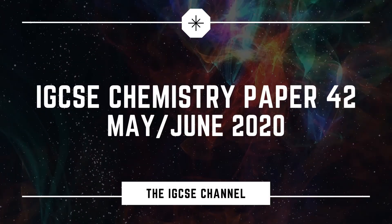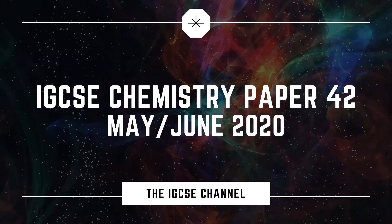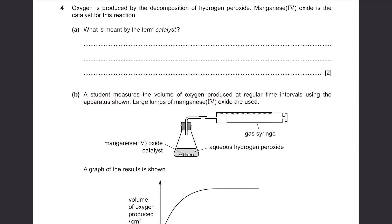Cambridge IGCSE Chemistry May/June 2020, Paper 42. Question 4: Oxygen is produced by the decomposition of hydrogen peroxide. MnO4 is the catalyst for this reaction.